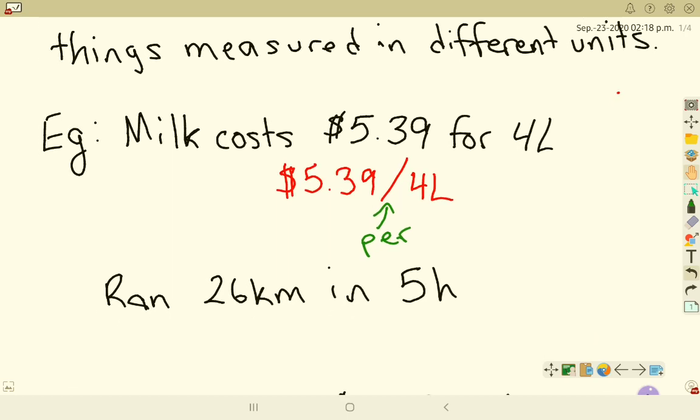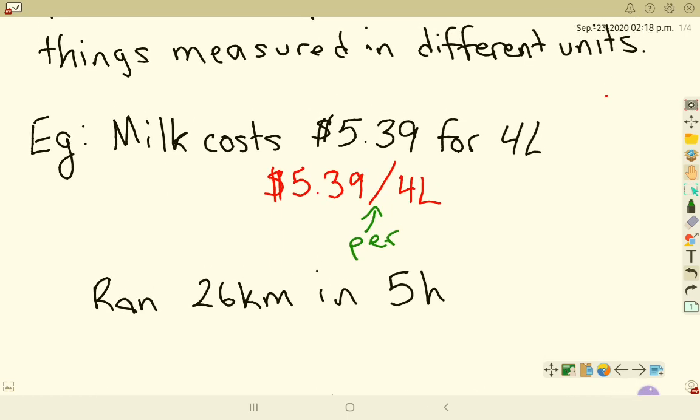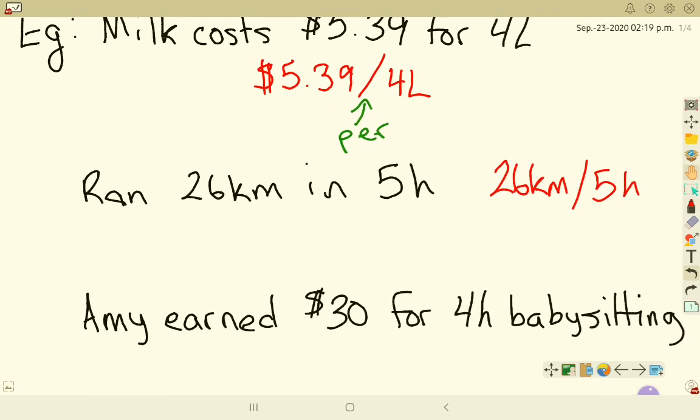If I had another one here, I could say that I ran 26 kilometres in 5 hours. That's a lie. I'd probably die. But if I ran 26 kilometres in 5 hours, my rate would be 26 kilometres per 5 hours. That is a rate. I'm comparing a distance and a time. They're two different things compared together.